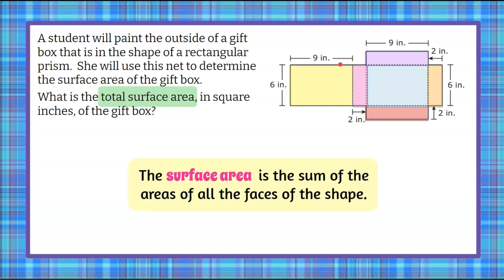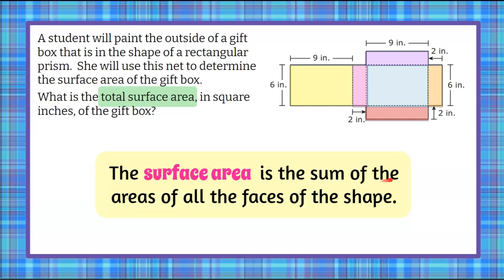So we're going to start by understanding that surface area is the sum of the areas of all the faces of the shape and we can see we have one, two, three, four, five, six shapes. So we have our box and our flaps to seal it closed.